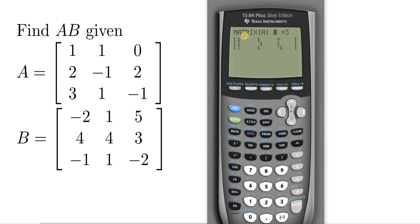I'm going to check A. So 1, 1, 0. 2, negative 1, 2. 3, 1, negative 1. Yep. So second matrix. So now they're both there, you see. They're both there, A and B.